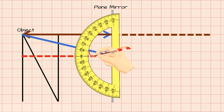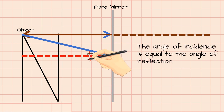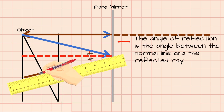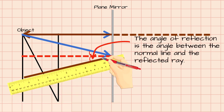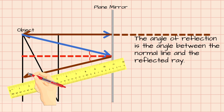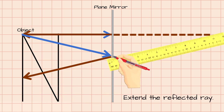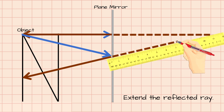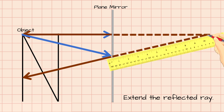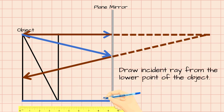The angle of incidence is the angle between the normal line and the incident ray. To draw the reflected ray, measure the angle of reflection. The angle of incidence is equal to the angle of reflection. The angle of reflection is the angle between the normal line and the reflected ray. Always indicate the arrow to denote the direction of the light ray. Extend the reflected ray.